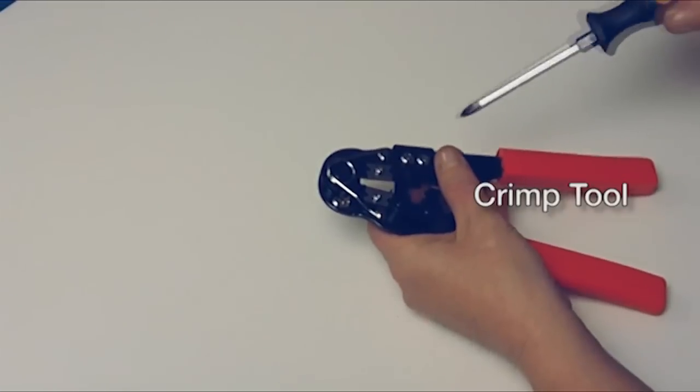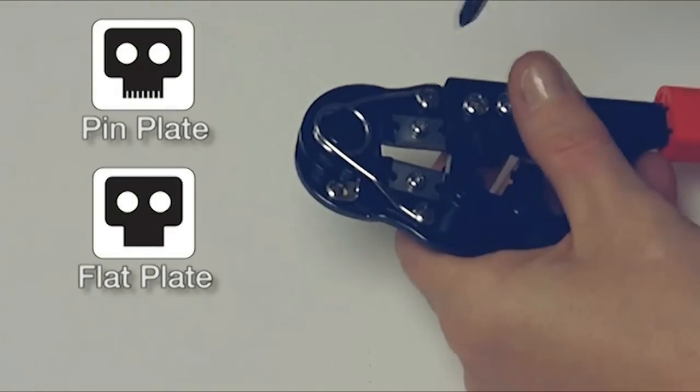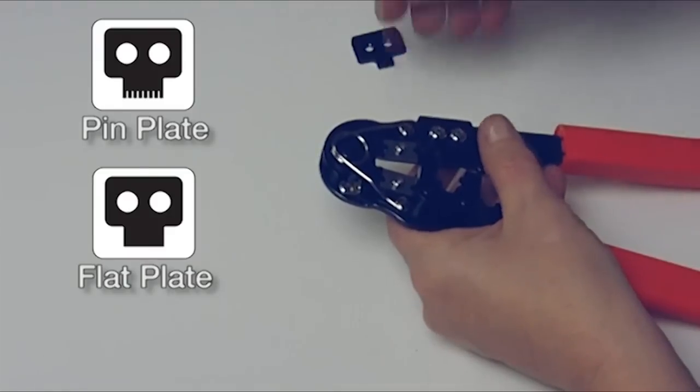To start, one adjustment needs to be made to the crimp tool. Remove the flat crimp plate and reinstall the pin set crimp plate.